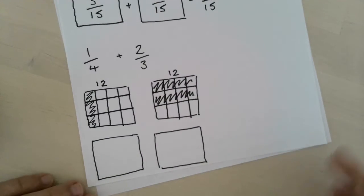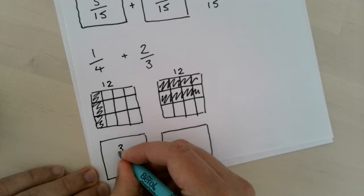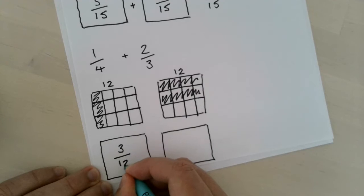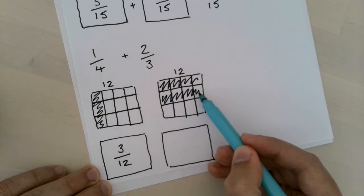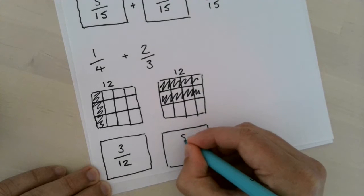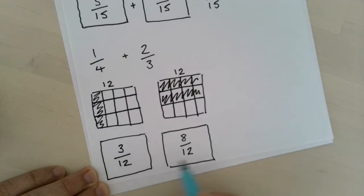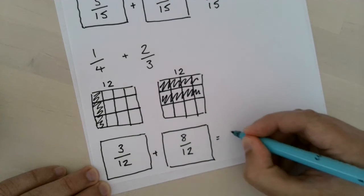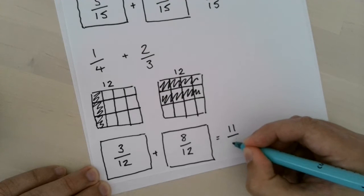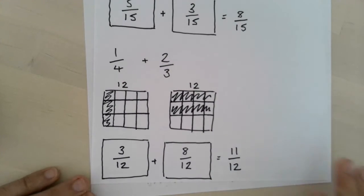So let's count up the shaded parts now. We have 3 shaded parts out of 12, and we now have 1, 2, 3, 4, 5, 6, 7, 8 - 8 shaded out of 12. Adding those together because they're now the same denominator, we have 8 plus 3 which is 11, 11 over 12.